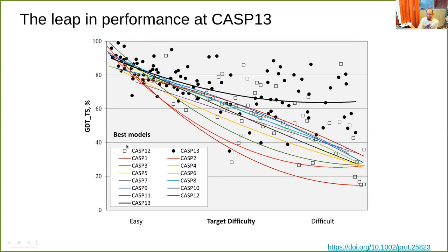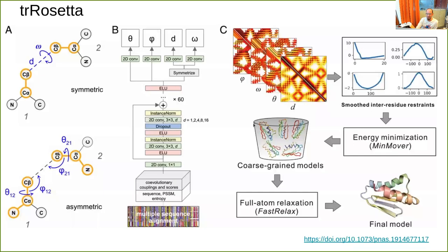Looking at a GDT plot — where 0 is random and 100 is perfect — with all CASP targets sorted from easy to difficult: from CASP1 to CASP3 improvement happened, but from CASP4 onwards improvement was quite small until CASP12. At CASP13 it jumped enormously in performance — not only DeepMind, but other groups doing similar things also improved. Soon after CASP13, a program called trRosetta was published that basically did the same thing.